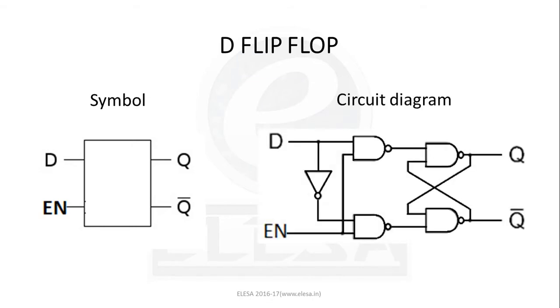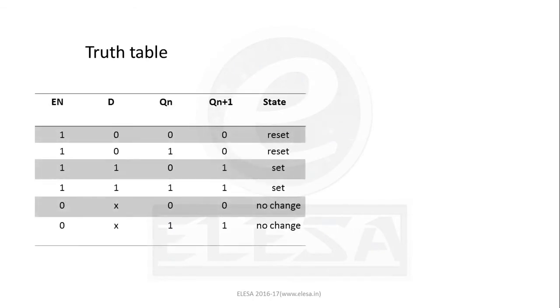The circuit diagram shows the working of the D flip-flop. The inverted D input is given to another NAND gate. When enable is low, the latch is ineffective and any change in the value of D input does not affect the output at all. When enable is high, a low D input makes Q low, resetting the flip-flop, and a high D input makes Q high, setting the flip-flop. In other words, the output Q follows the D input when enable is high, and Q bar is the complement of Q.